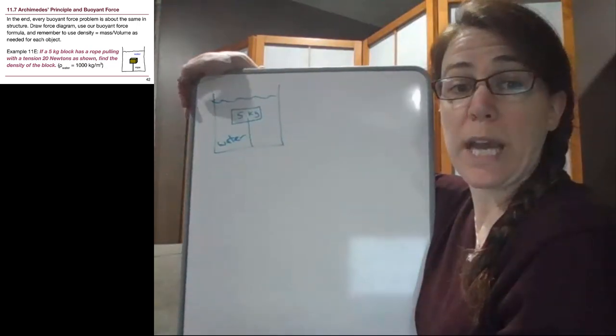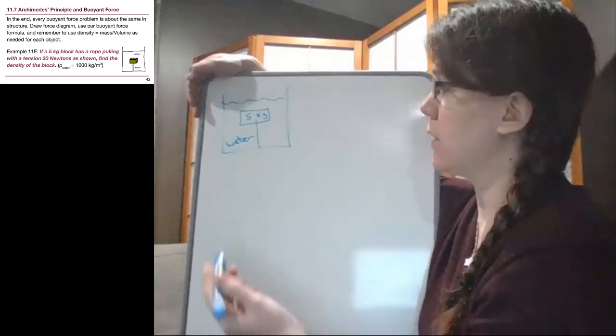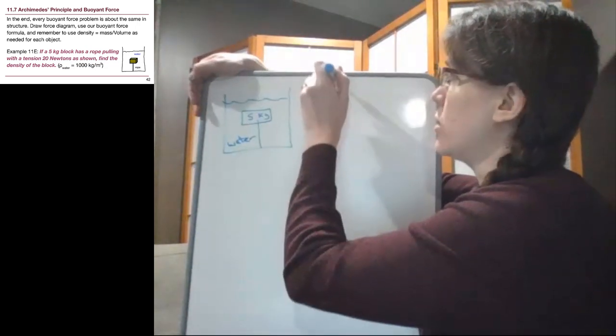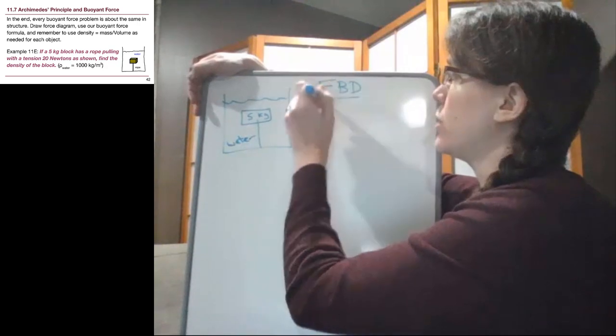And we have a tension of 20 Newtons that we're told about in the rope. So we can draw the forces out in a free body diagram of this block.